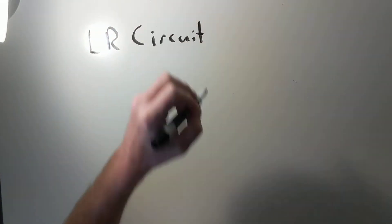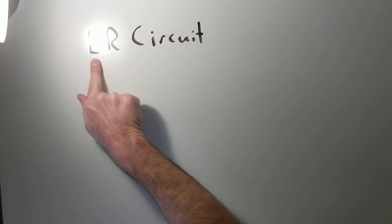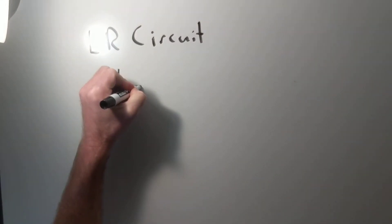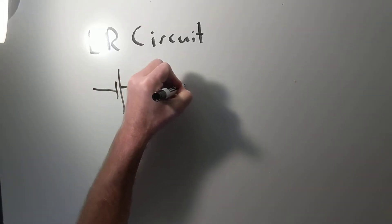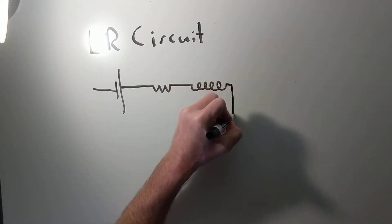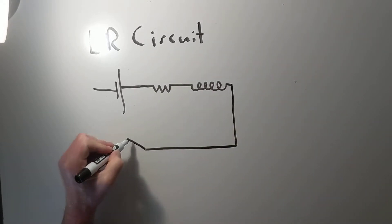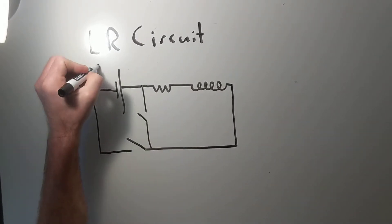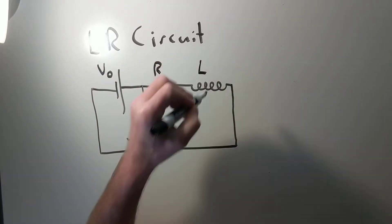This first circuit, which we call the LR circuit — although some people will call it the RL circuit — it doesn't really matter. The L is the inductance coil because L is a measure of self-inductance, and R is a resistor. So we're going to have a battery or some kind of power supply, then a resistor, then an inductance coil — that little curly Q thing — and then down here we'll have a switch, and right here we'll have another switch. We'll call this V₀, the resistor R, and this the inductance coil L.